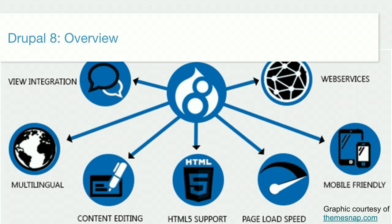Drupal 8 shipped two years ago in November 2015 with a bunch of cool features. A lot of modules that everybody uses got pulled into core — views, entity references, date module. All of that is available out of the box now. A lot of work went into the multilingual initiative too, which used to require 32 contributed modules glued together in weird ways. Now it's just three things, you pick which features you want. We also did a lot of work on the front end: HTML5 support, mobile first.